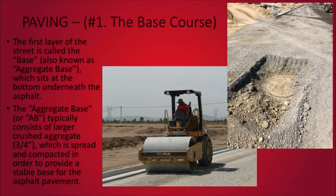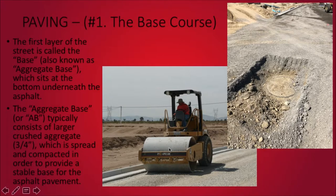The first section to go in for the paving is the aggregate base course, simply known as the base or AB. It sits at the bottom underneath the asphalt and typically consists of larger crushed three-quarter inch rock, which is spread and compacted in order to provide a stable base for the asphalt pavement above. In these pictures you can clearly see the layer of gray rock that is the aggregate base compared to the native subgrade underneath it, and the bottom picture shows them compacting it.